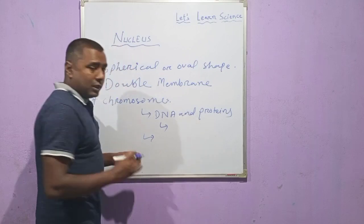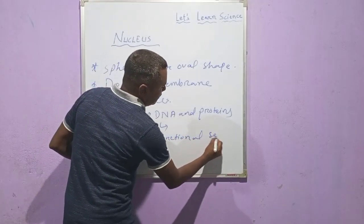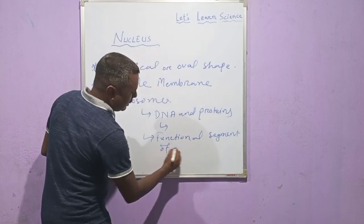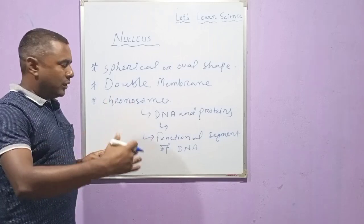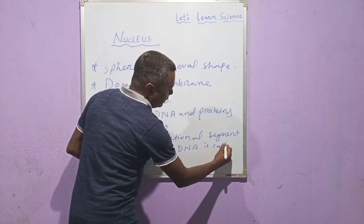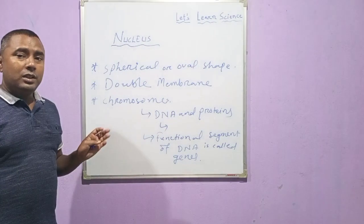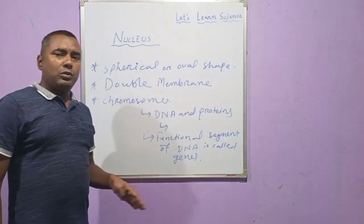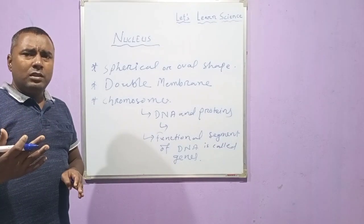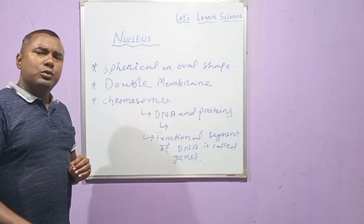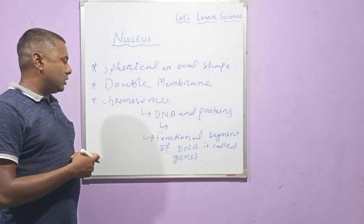Chromosomes are found in the nucleus. The functional segment of DNA — that is, a part of DNA that can carry out function — is called a gene. Genes are responsible for carrying the genetic information, or genetic characters, from one generation to another generation, transmitting different characteristics from parents to offspring.